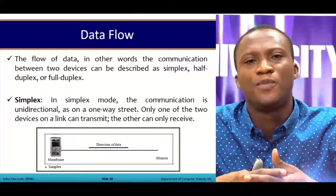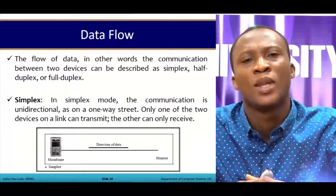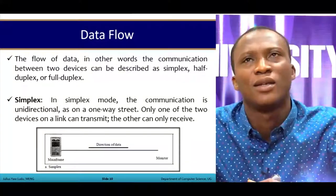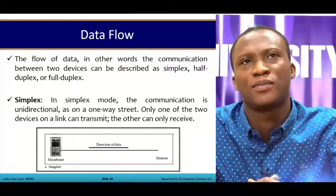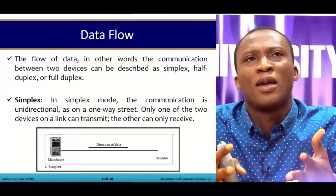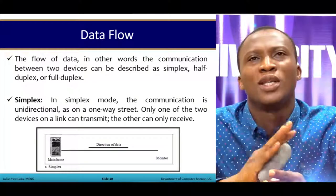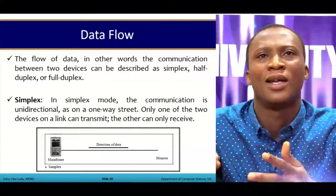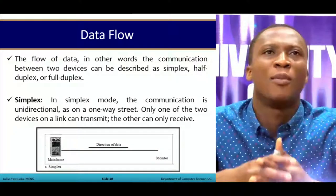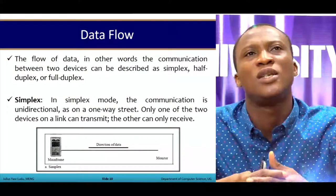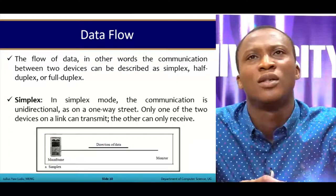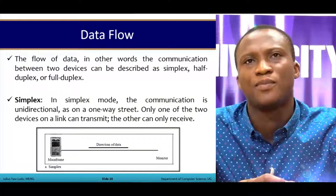Now we want to look at data flow — how data moves from one end to the other. Communication between two devices can be described as simplex, half duplex, or full duplex. With simplex, communication is unidirectional, like a one-way street. For example, from a keyboard to a monitor — whatever you type, you see on the monitor. Only one of the two devices on the link can transmit; the other can only receive.